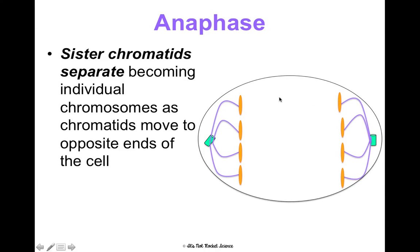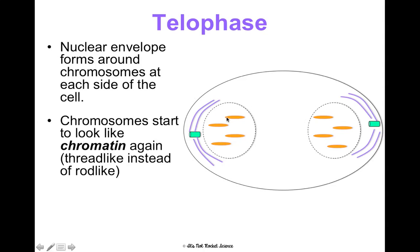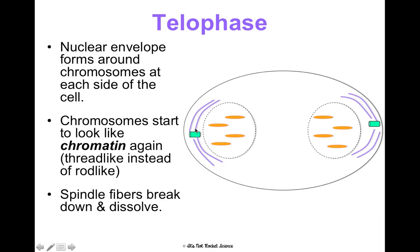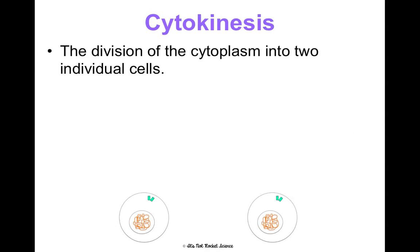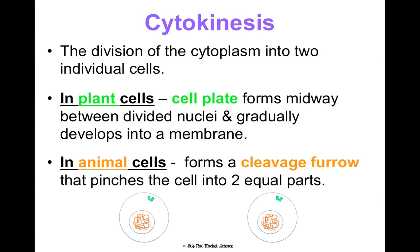In anaphase, the sister chromatids separate and are pulled apart to opposite poles at either end of the cell. In telophase, the nuclear envelope starts reforming around the chromosomes, forming two nuclei for the two new cells. Chromosomes start to decondense and look thread-like again rather than rod-like, and spindle fibers start dissolving. Cytokinesis begins — the division of the cytoplasm. In plant cells, a cell plate forms halfway between the nuclei and gradually splits the cells. In animal cells, a cleavage furrow pinches in the middle until they separate into two cells.